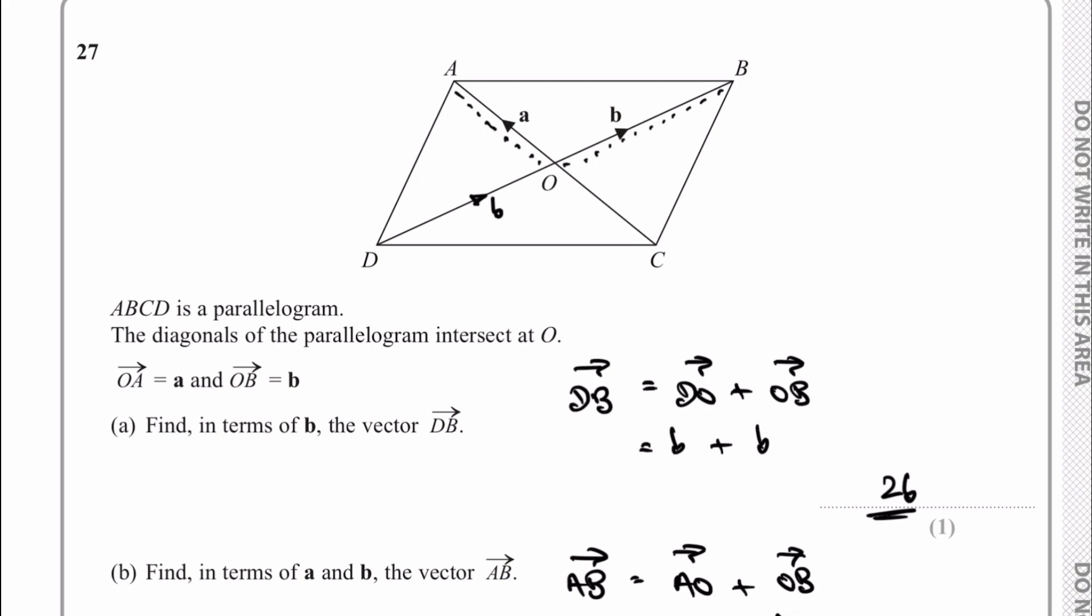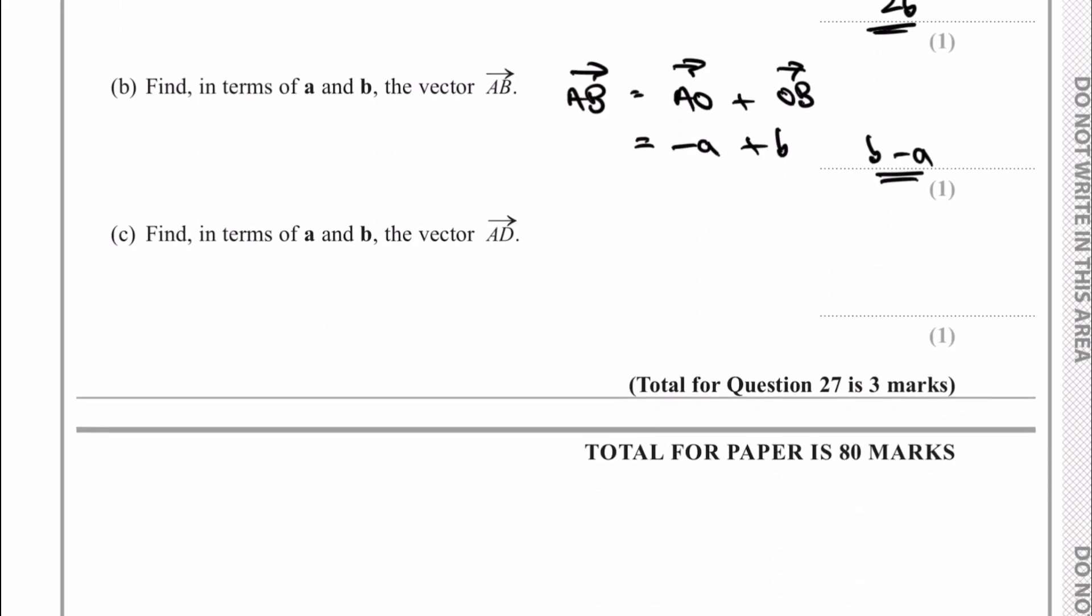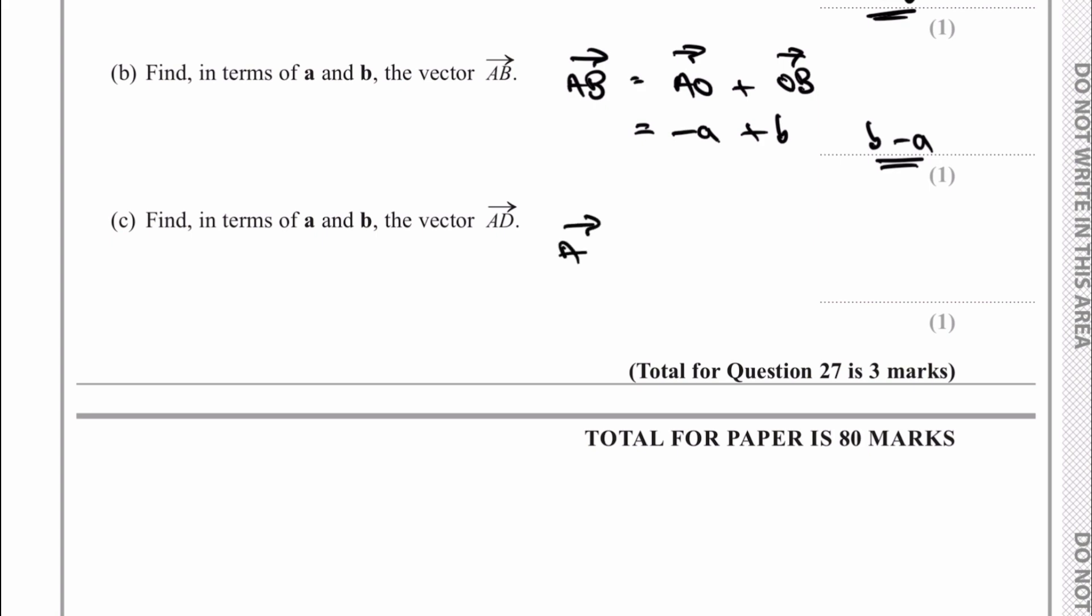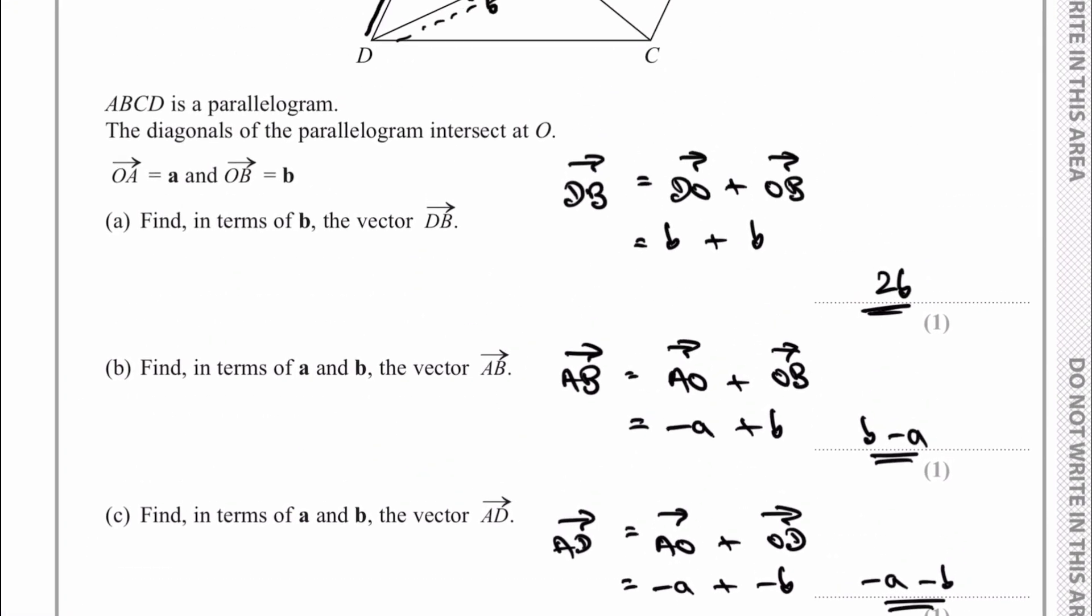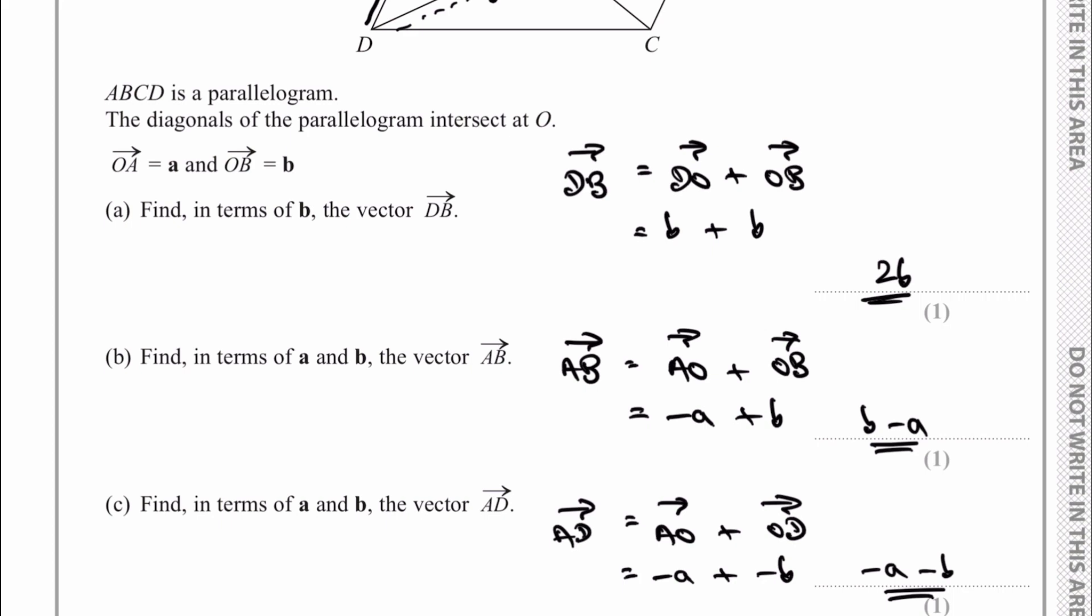So the very final question is, find in terms of A and B, the vector AD. So what we're looking at is this vector along here. And what I'm going to do is I'm going to go D to O, and then I'm going to go O to A. So vector AD is going to be equal to vector AO plus vector OD, and that's going to be negative A plus negative B. So it's negative A, negative B, and that would be vector AD. So a little bit more problematic if you're not used to these sorts of questions. But again, in the comments, please do let me know. Hopefully that's been helpful to you. Please do subscribe to the site, and I'll look forward to seeing you inside the next video.